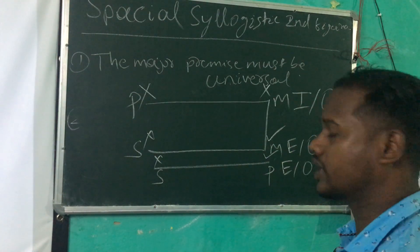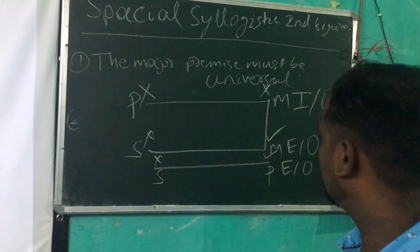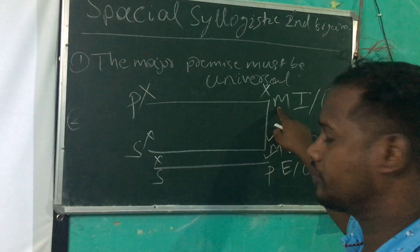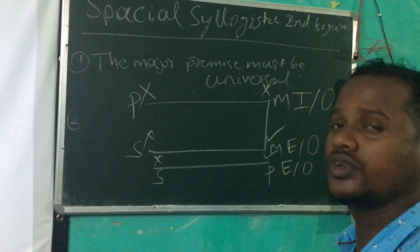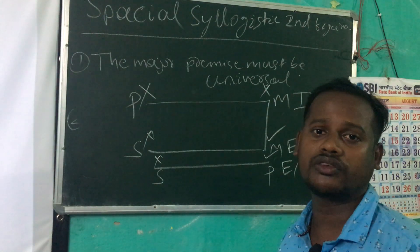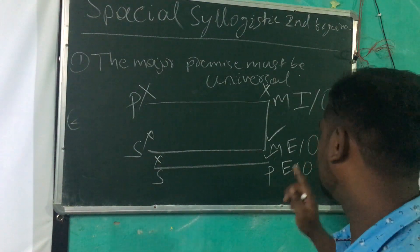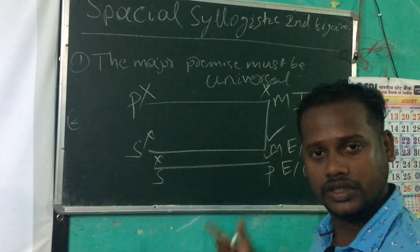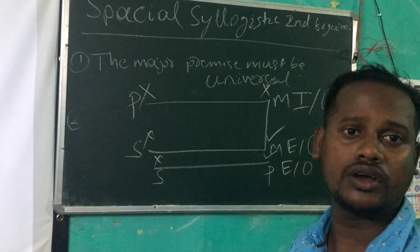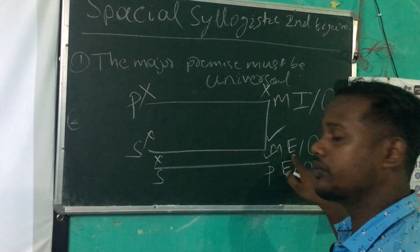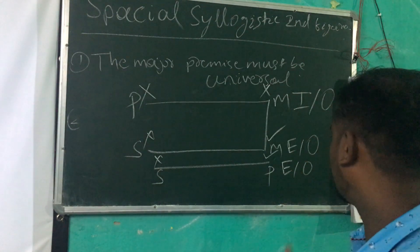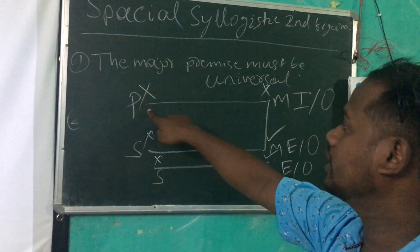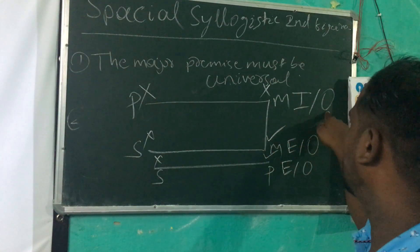Suppose in the second figure, the major premise is not universal — it is particular, that is I or O. A particular proposition distributes no term, so the middle term is undistributed in the major premise. It must be distributed in the minor premise in order to avoid the fallacy of undistributed middle. In the minor premise, the middle term occurs as predicate, so the minor premise must be negative, because only negative propositions distribute the predicate term. Since one premise is negative, the conclusion must be negative according to rule 6. If the conclusion is negative, it distributes the predicate term, meaning the major term is distributed in the conclusion but not in the major premise. So we commit the fallacy of illicit major. Therefore, the major premise cannot be particular — it must be universal. Proved.